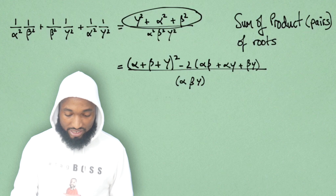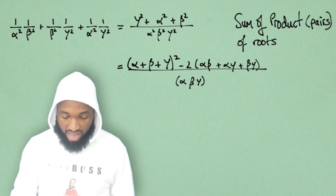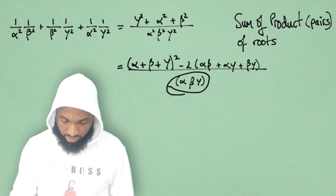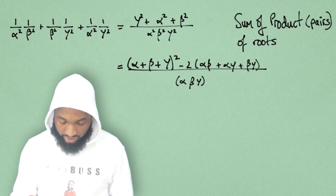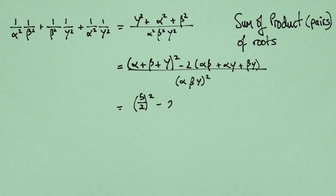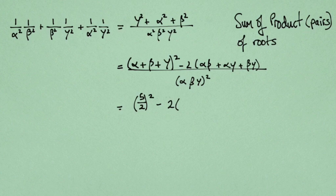We know what this is, and this is just alpha beta gamma, all squared. And we substitute this using the next little hint they gave us in the question.